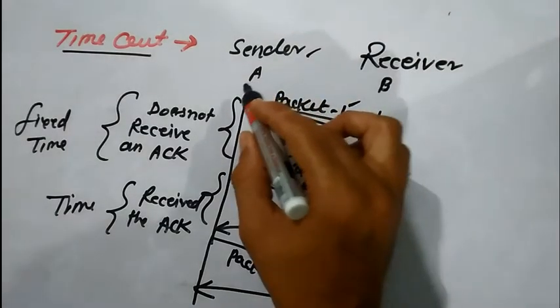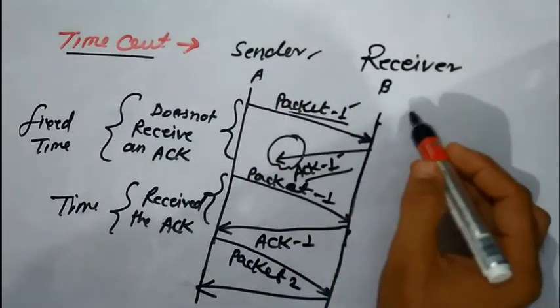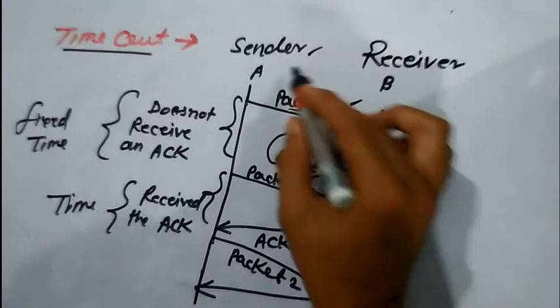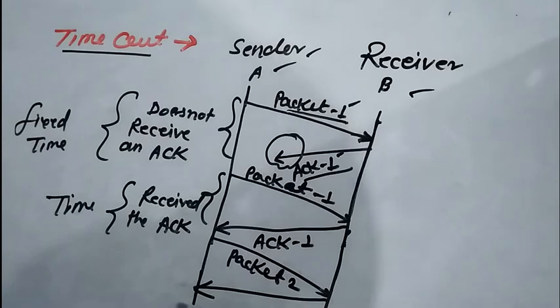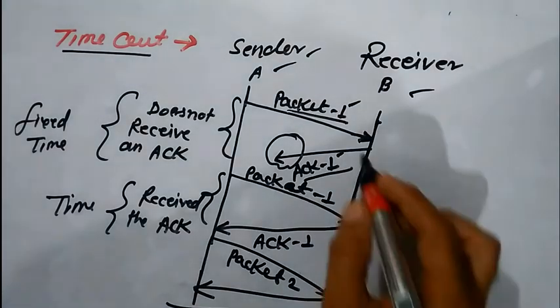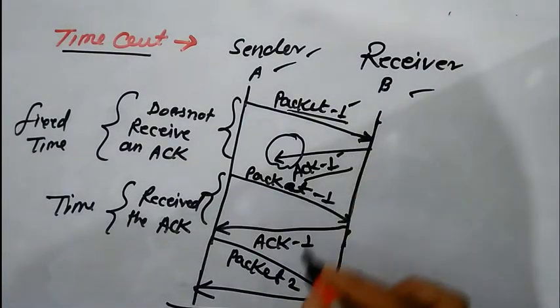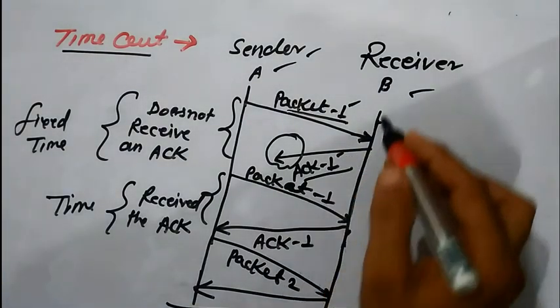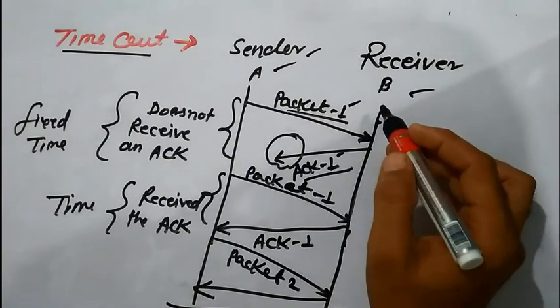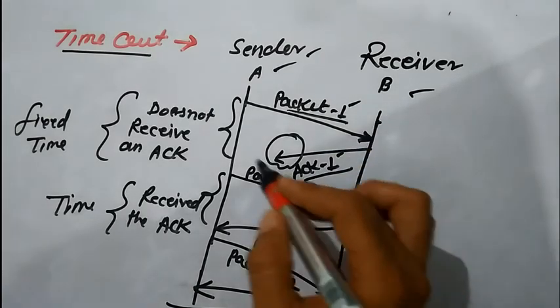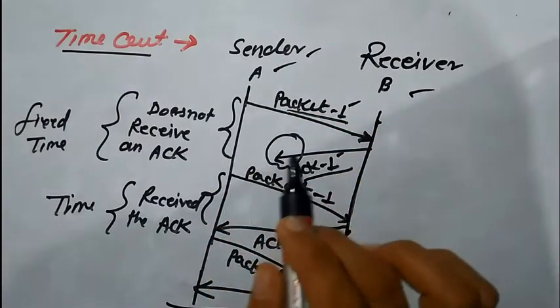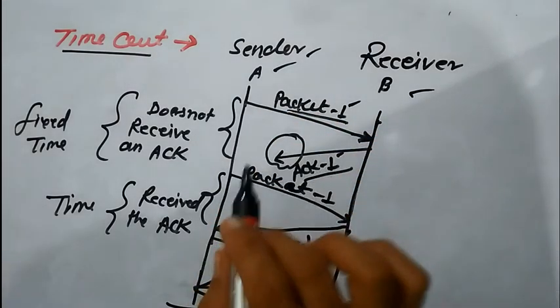The sender then sends the next packet to the receiver, and the delivery of the packet from sender to receiver is reliable. This is the first type of issue — the receiver sends an acknowledgement but the sender does not receive it.